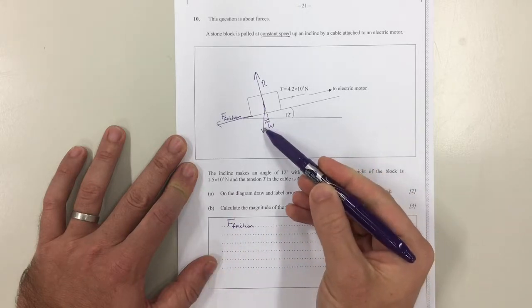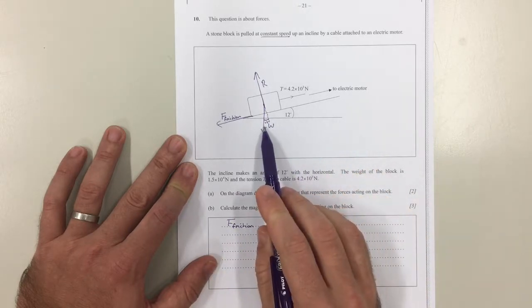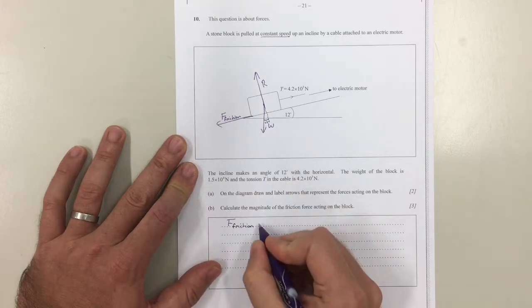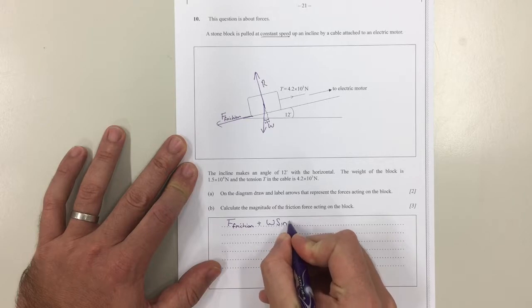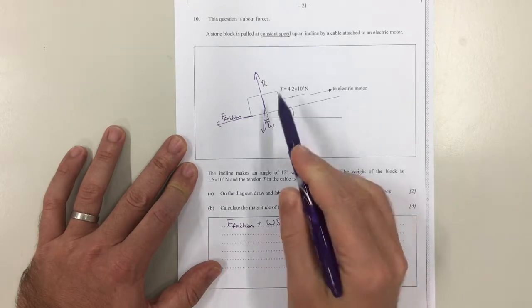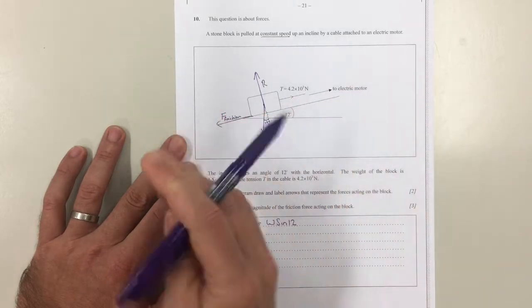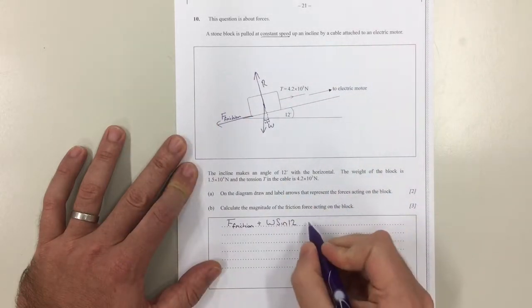Second of all, there is a component of the weight acting down the hill, and that component is W sine 12. And all of that stuff acting down the hill must equal the force acting up the hill, which is the tension.